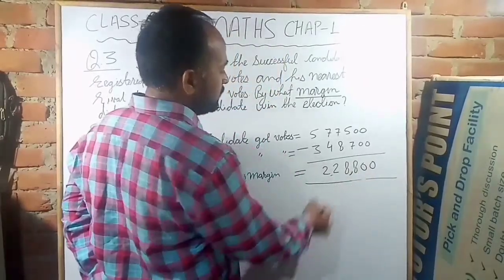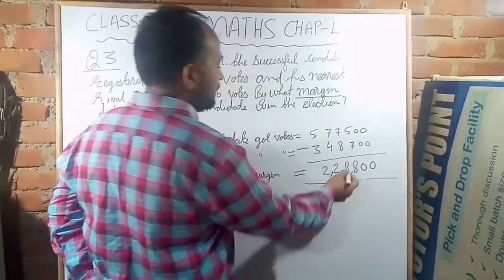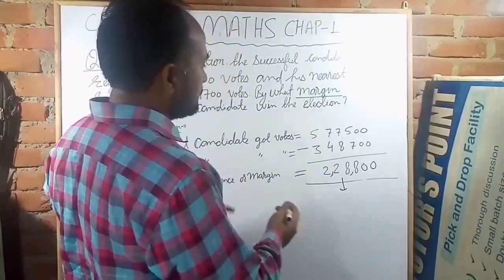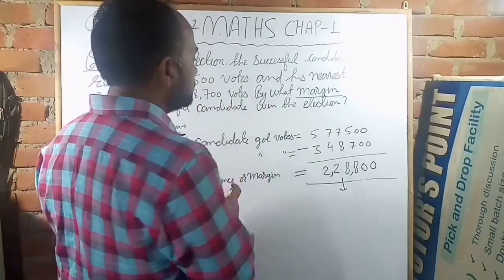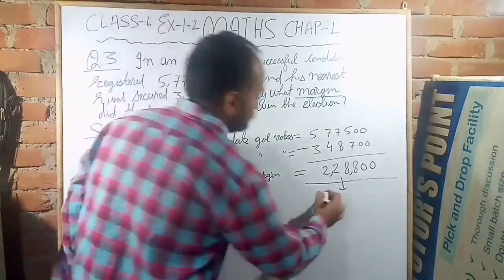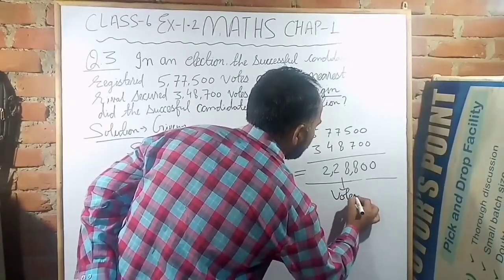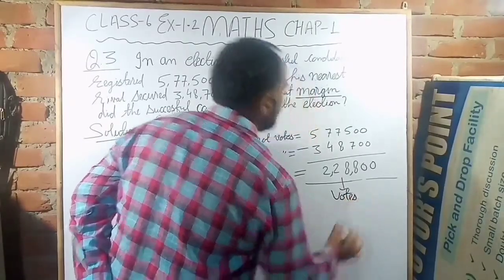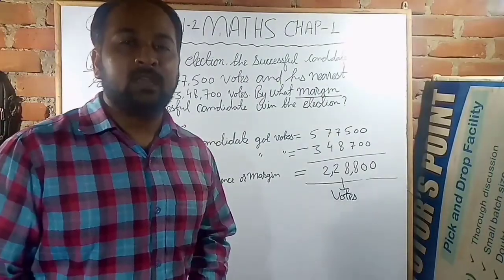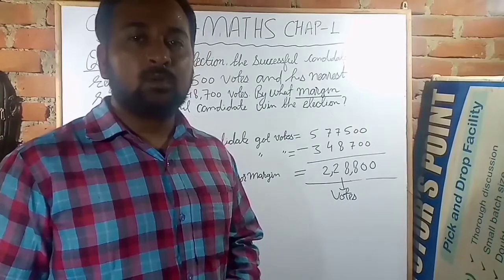Now we will apply commas — before the hundreds place and before the ten-thousands place. So these are the votes that have been obtained by the successful candidate for winning the election, meaning these are the more votes he received.